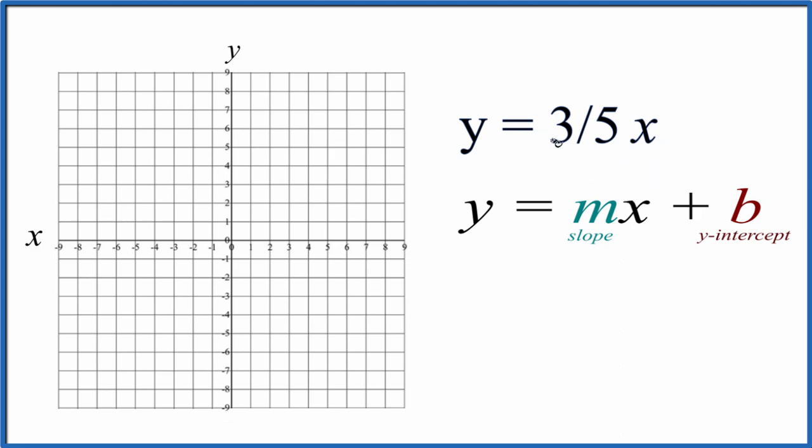When we look at this, we have three-fifths x and no b. That means that the b, that's the y-intercept, is just zero. So we're going to go over here to the y-axis and go to zero. That's where we're going to cross or intercept the y-axis.